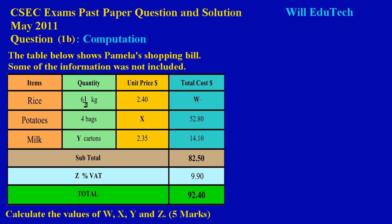For potatoes, she bought 4 bags. We don't know the unit cost, it's X, so apparently we're going to have to find that, and the total cost came to $52.80. At the bottom they are asking us to calculate the values of W, X, Y, and Z. A typical question like this in the exam is worth 5 marks.